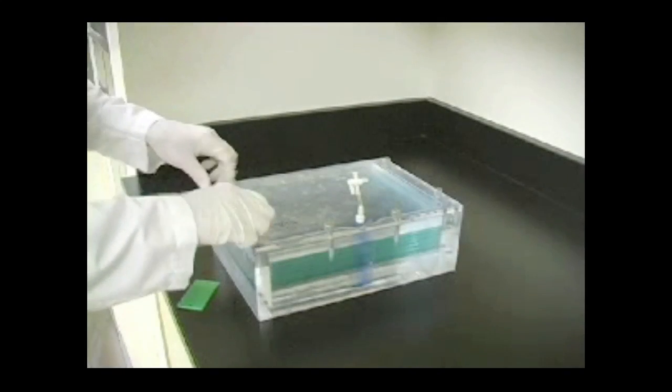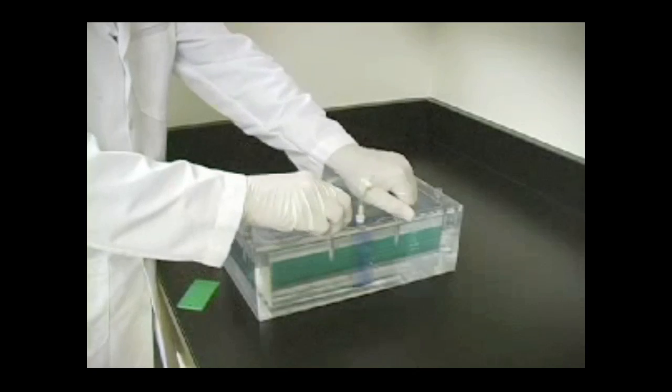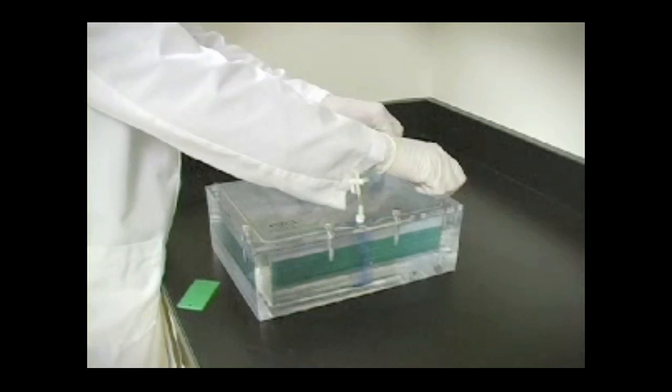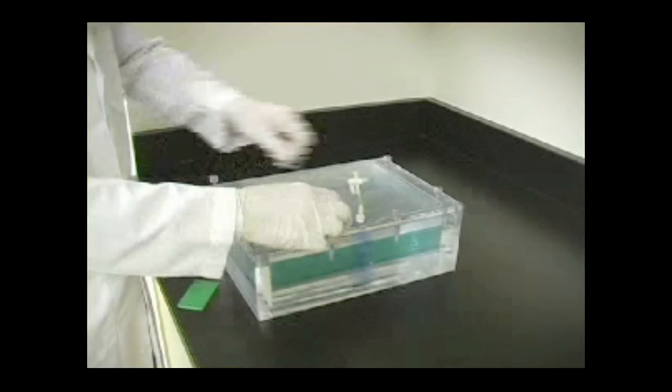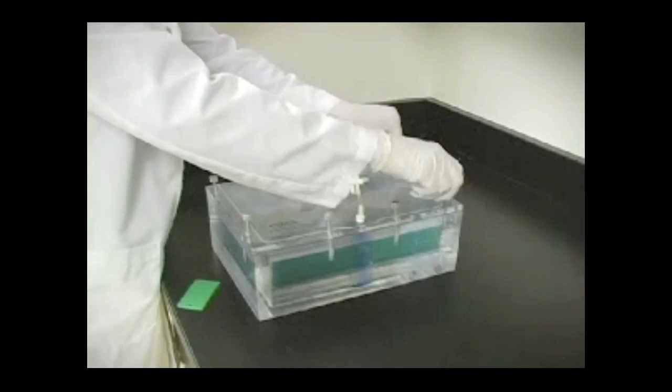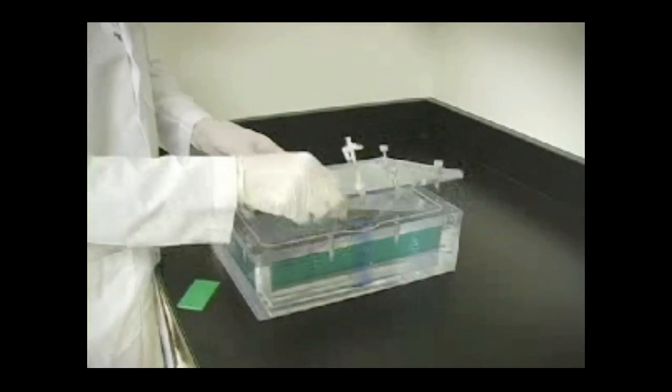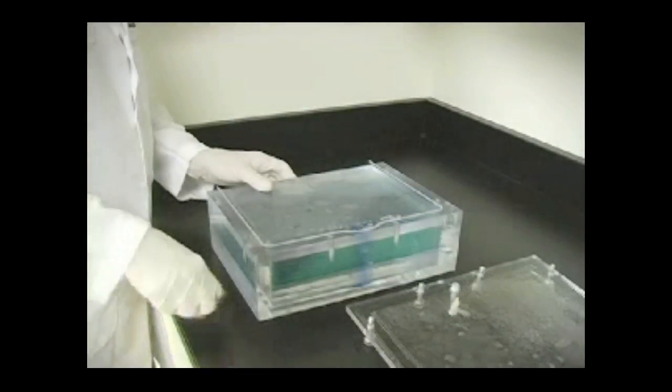After polymerization, remove the sealing plate from the multicasting chamber. Remove the gels from the stack one at a time using the green gel releaser.